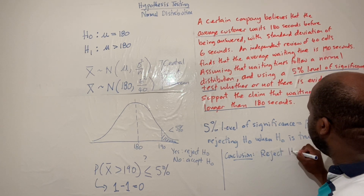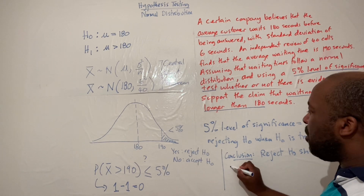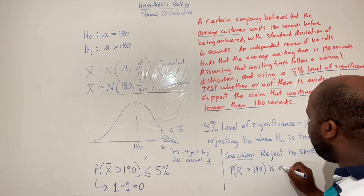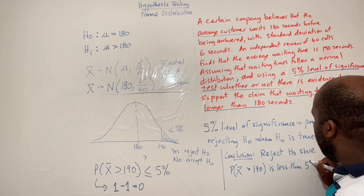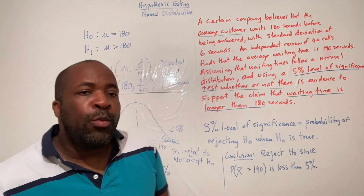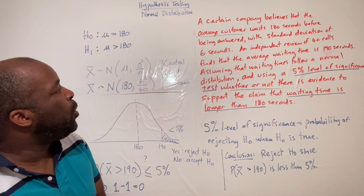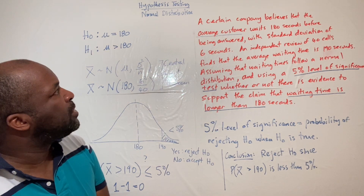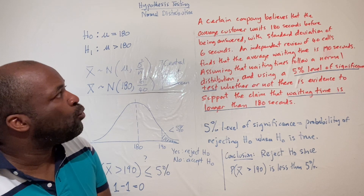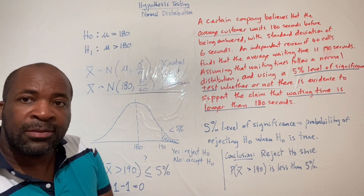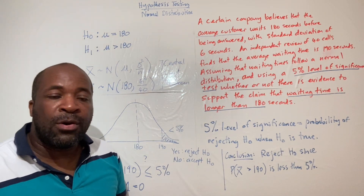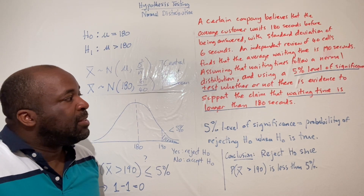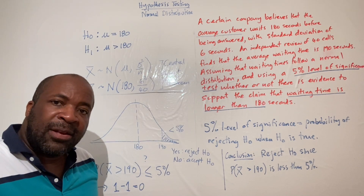Conclusion: Reject H-naught, since the probability that X-bar is greater than 190 is less than five percent. In exam wording: there is insufficient evidence to support the claim that the average waiting time is 180 seconds, or equivalently, there is sufficient evidence to support the claim that the waiting time is longer than 180 seconds at the five percent level of significance.